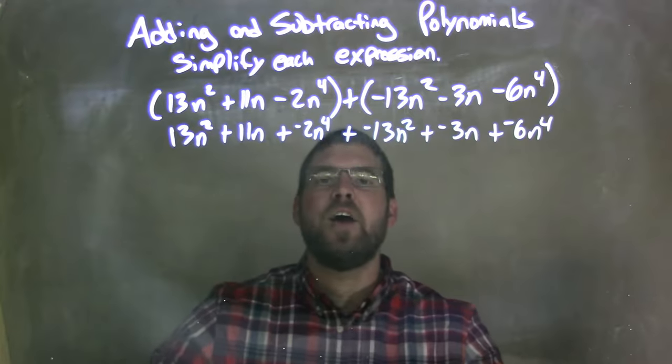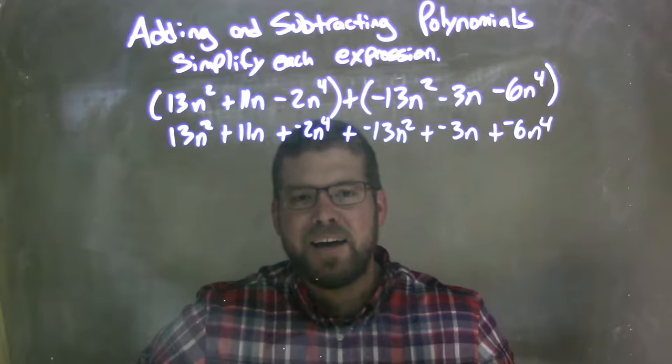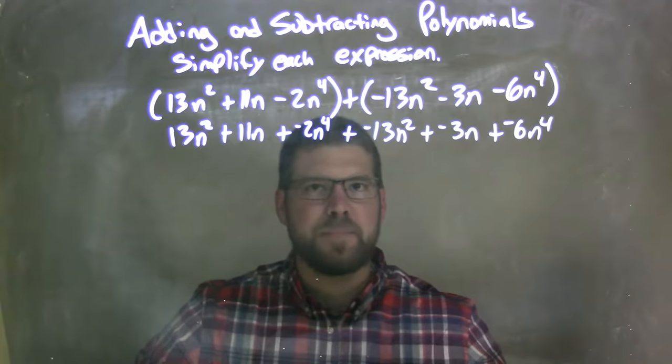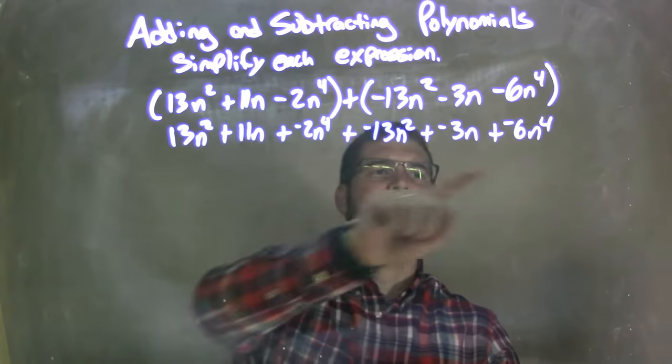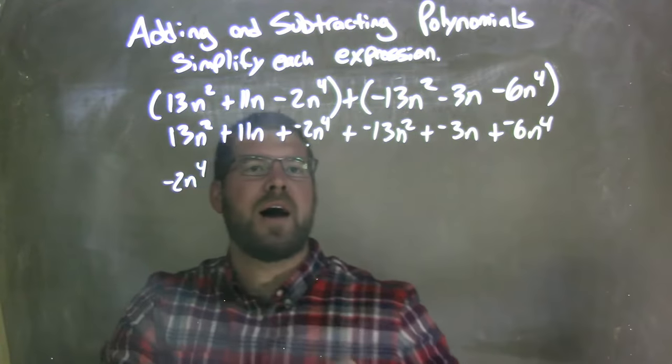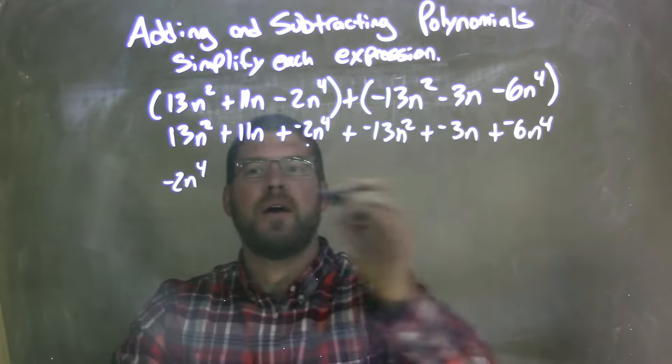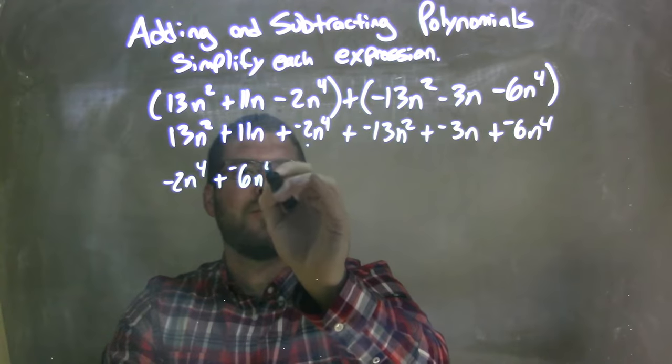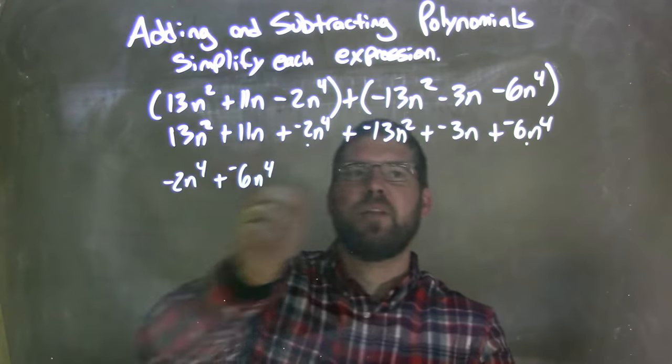So now I'm going to rearrange with having the highest degrees first and bringing my like terms together. So I look, my highest degree is to the fourth power. So I'm going to go to the negative 2n to the fourth first. I put a little dot underneath it saying that I brought that down, plus a negative 6n to the fourth was next. And I don't see anything else for the fourth power.